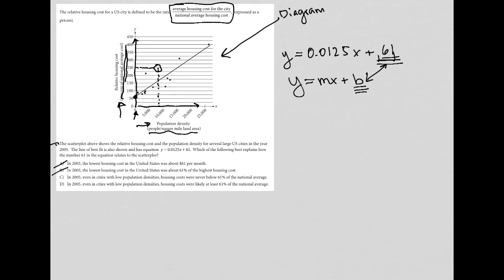Choice C: in 2005, even in cities with low population densities, housing costs were never below 61% of the national average. That's pretty good. I like that answer. We can't go lower than zero in population density, which means we could say they were never below 61%. So I like choice C.